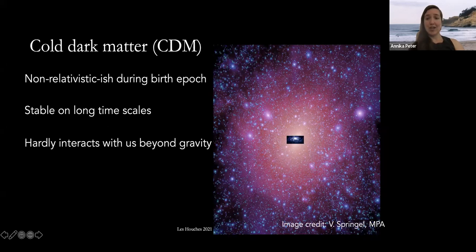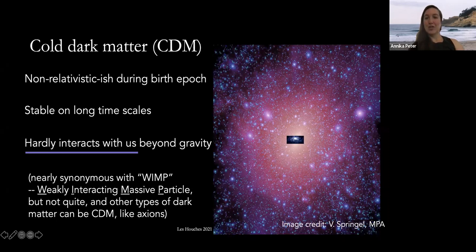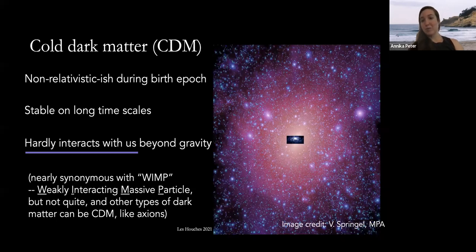Cold dark matter is our standard paradigm — an astronomical or cosmological classification of dark matter candidates. Phenomenologically, cold dark matter is non-relativistic during its birth epoch, stable on cosmological time scales, and in its purest form completely non-interacting beyond gravity. Often you'll hear WIMP and cold dark matter used interchangeably, but WIMPs are not pure cold dark matter because WIMPs do interact a little bit — that's how we get the WIMP miracle, where essentially dimensional analysis shows that WIMPs produce basically exactly Ω_matter's worth of dark matter in the universe.